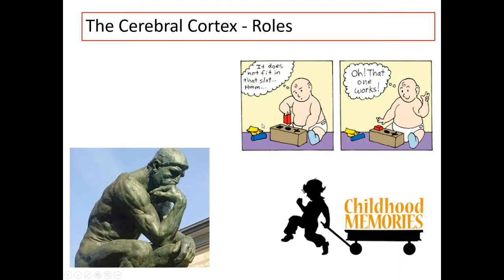The cerebral cortex is the area of the brain which we call the cerebrum at National 5. It is the center of all conscious thought — when you think or reason, it is the area that we use. It is also used to recall memories and alter our behavior using our experiences. So when you go through trial and error, or when you think or remember things, this is the cerebral cortex.